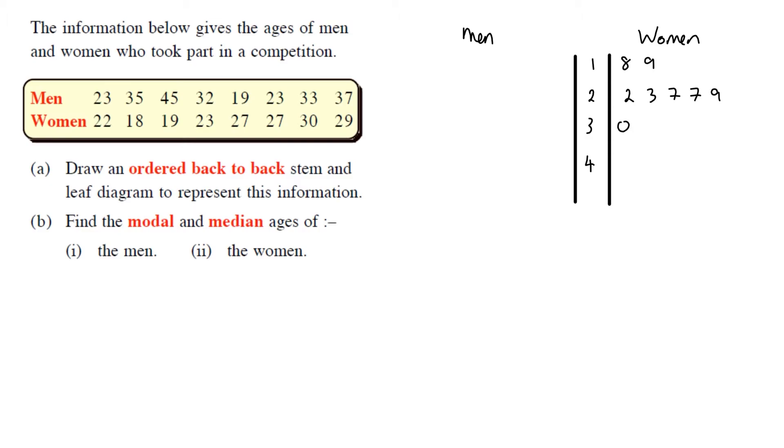For the men, we've got 23, 35, 45, 32, 19, 23, 33, 37. So what you'll notice here, actually most of the numbers have ended up in the correct order, but they're not all perfect. So this would be called an unordered stem-and-leaf diagram.